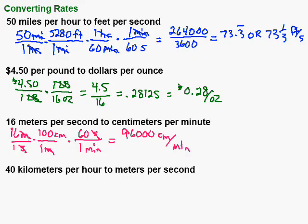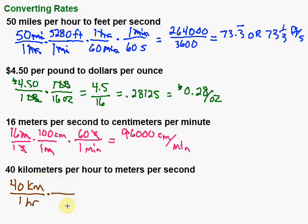Let's try one last problem. We have 40 kilometers per hour, and we want to convert that to meters per second. Set up the initial ratio: 40 kilometers over 1 hour. Kilometers and meters — 1 kilometer equals 1,000 meters. Kilometers are on top, so I put 1 kilometer on the bottom so it cancels, and 1,000 meters goes on top. Cancel those kilometers. If I stopped now, I'd have meters per hour — not exactly what I want, but getting there. Now I need to change hours into seconds.